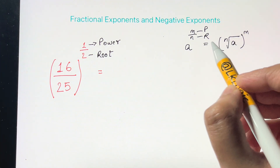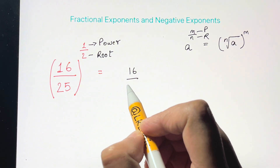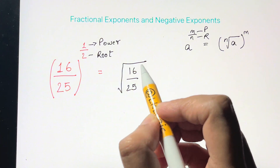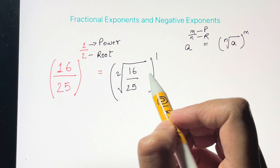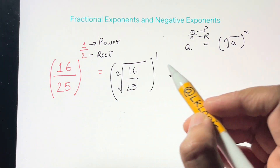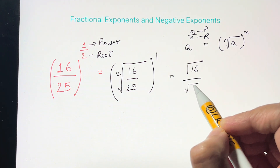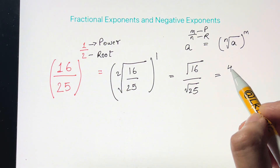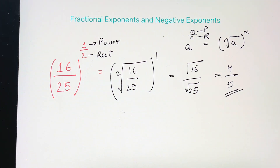So we have 16 over 25. The root we apply is the square root and the power is 1. You can split the square root: square root of 16 over square root of 25, with power 1. Square root of 16 is 4, square root of 25 is 5, so the answer is 4/5.